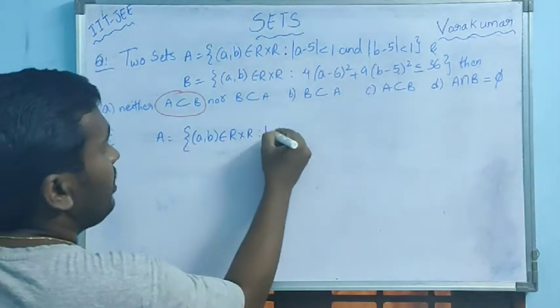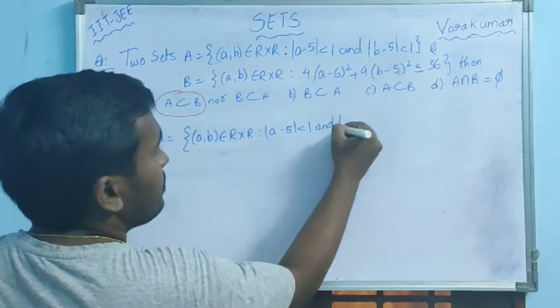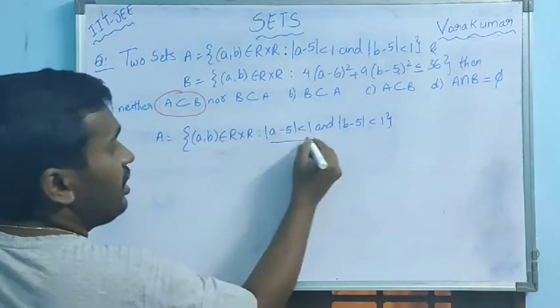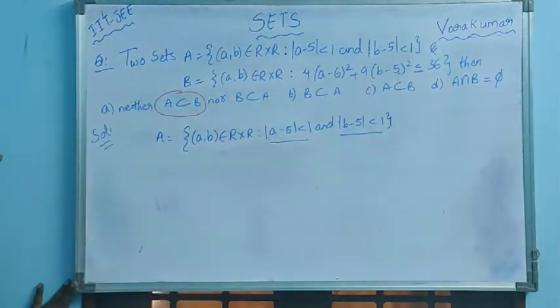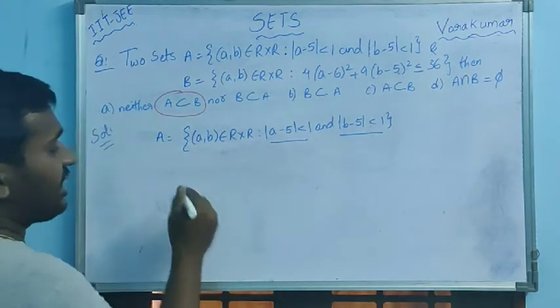So from here we need to find the a value, b values. Here we know from the linear inequations, modulus conditions: a minus 5 less than 1, it means it lies between -1 < a-5 < 1.